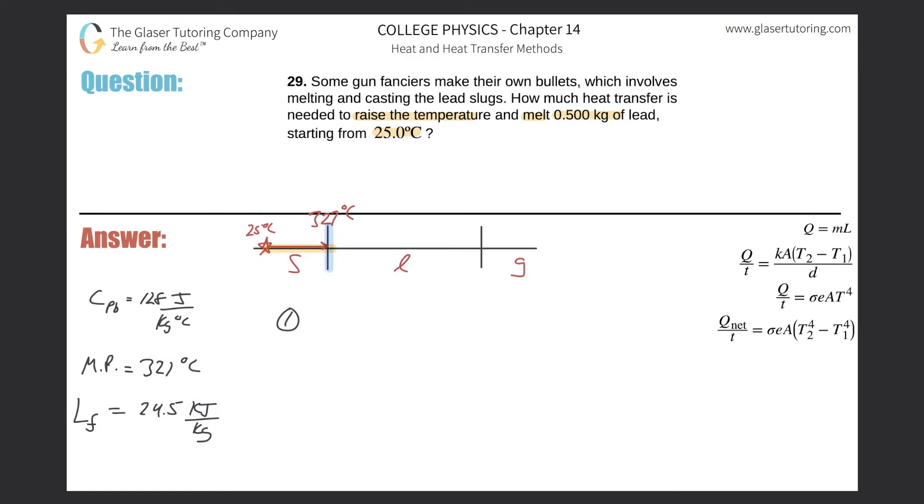So part one here will be Q equals MC delta T. The heat necessary to change the temperature of the solid lead will be equal to the mass of the lead, which they told us was 0.5 kilograms. Specific heat that's looked up - it's 128 joules per gram Celsius. The temperature change will be the final point of the melting point, 327, minus 25.